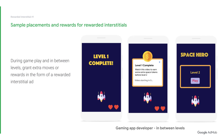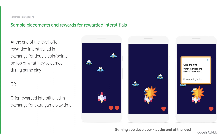Another option is during gameplay: when the user only has one move left, grant extra moves in the form of a rewarded interstitial ad. A third option is at the end of the level, where you can offer rewarded interstitial ads in exchange for double coins or points on top of what they've earned throughout gameplay. Additionally, if you're an idle game developer, you can choose to show rewarded interstitial ads right after a user starts a new countdown timer.